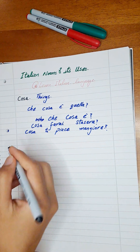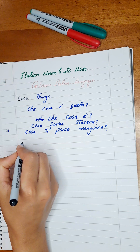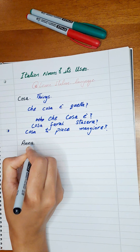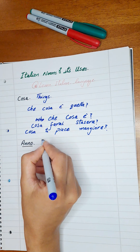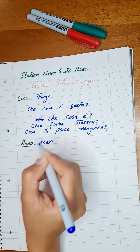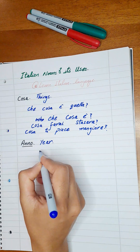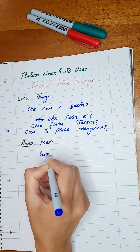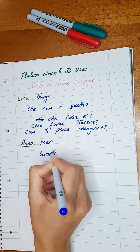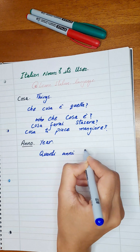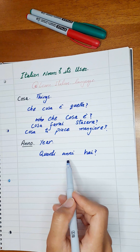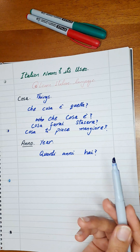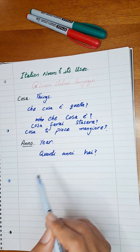Next word is Anno. Anno means 'year.' Like we say 'Quanti anni hai' — quanti means 'how much,' anni means 'year,' hai means 'you.' So the sentence means: How old are you?